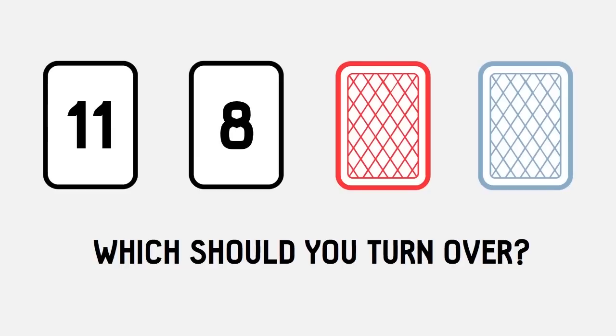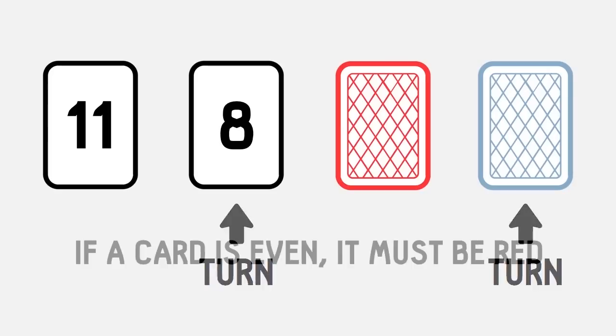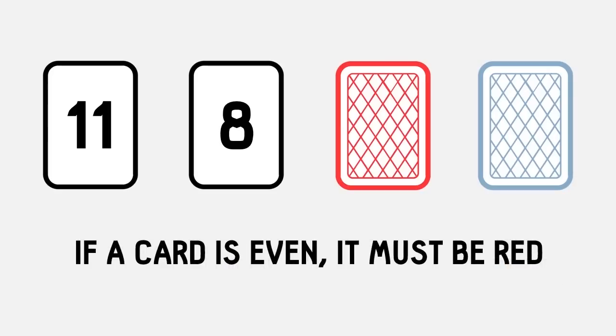The correct answer is to turn over the 8 and the blue card. Remember, the rule was, if the card was even on one side, it must have a red dot on the other. Since the rule is only about even numbers, we don't need to worry about cards with odd numbers.